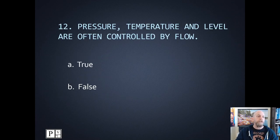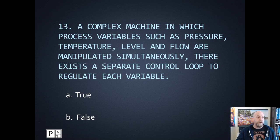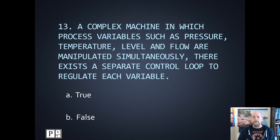Number twelve: pressure, temperature, and level are often controlled by flow. That's true — the most common actuator is the valve, so pressure, temperature, and level are usually controlled by the opening and closing of a valve. Number thirteen: in a complex machine where process variables such as pressure, temperature, level, and flow are manipulated simultaneously, there exists a separate control loop to regulate each variable. You're not going to mix those signals together — every pressure, temperature, level, and flow will have a completely separate control loop. That would be true.